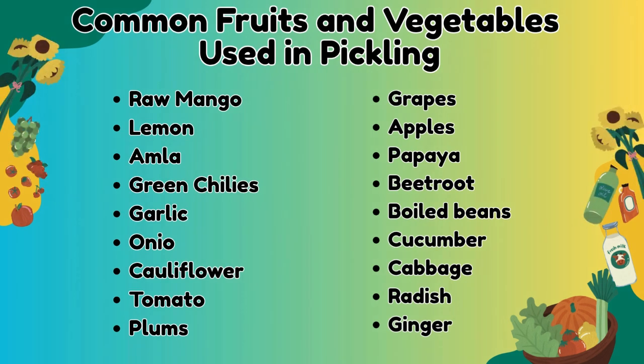These are some of the common fruits and vegetables used in pickling: raw mango, lemon, amla, green chilies, garlic, onion, cauliflower, tomato, plums, grapes, apples, papaya, beetroot, boiled beans, cucumber, cabbage, radish, and ginger.